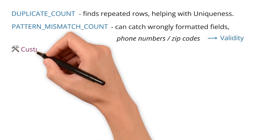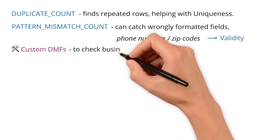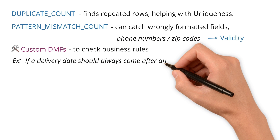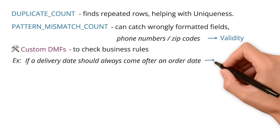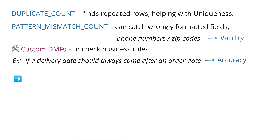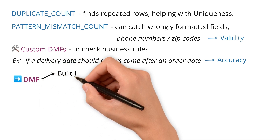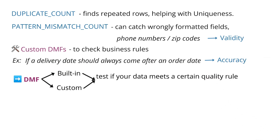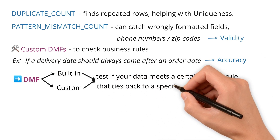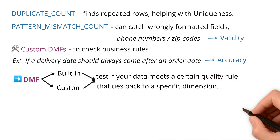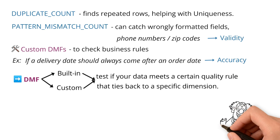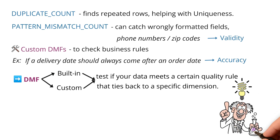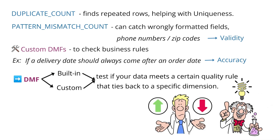You can also create custom DMFs to check business rules. For example, if a delivery date should always come after an order date, that would support the accuracy dimension. Each DMF — whether built-in or custom — helps test if your data meets a quality rule that ties back to a specific dimension. So instead of just talking about dimensions in theory, DMFs let you apply them in practice with real checks and real results.